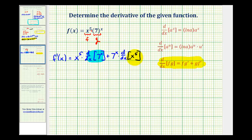So now we'll determine the derivative here and the derivative here. So f prime of x is going to be equal to x to the fifth times the derivative of seven raised to the power of x. And again, just in case you need the review, here's the formula.